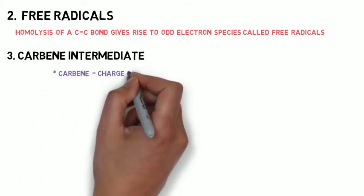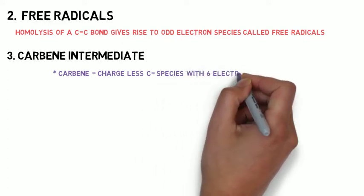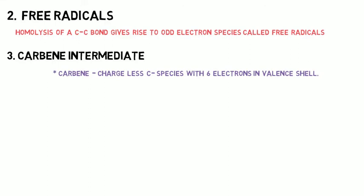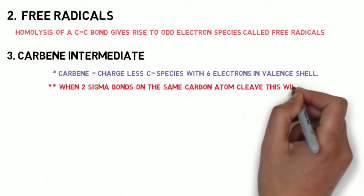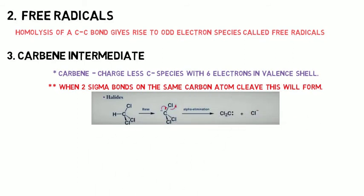First we can know what is carbene. Carbene is a chargeless carbon species which contains 6 electrons in its valence shell. When two sigma bonds on the same carbon atom cleave, this will form.